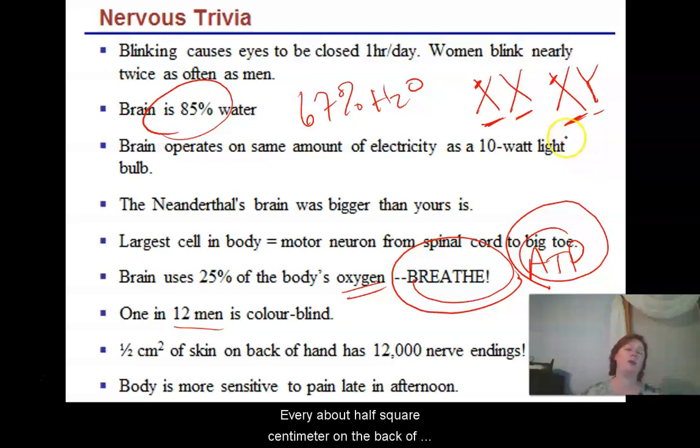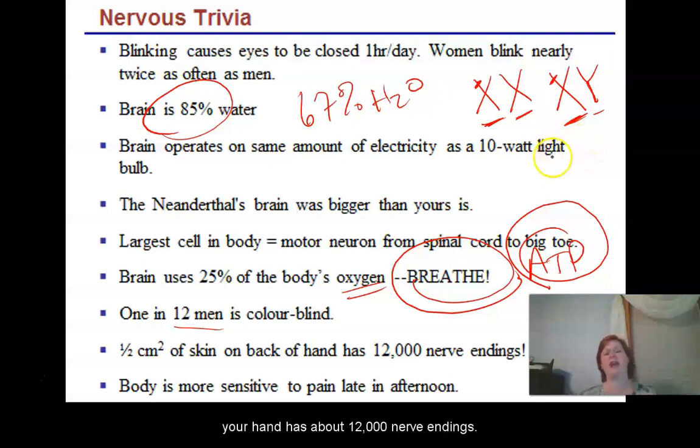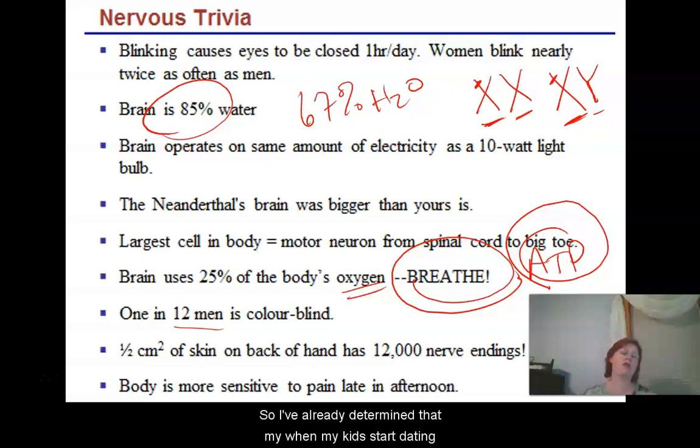Every half square centimeter on the back of your hand has about 12,000 nerve endings. Think about that. So I have already determined that when my kids start dating, I'm not going to worry about putting a chastity belt on them. They're going to wear giant woolen mittens that are duct taped at the wrist. No pinkies touching in the movie theater with my kids.